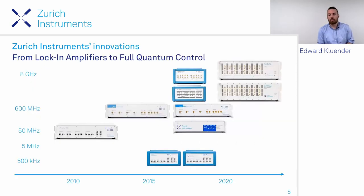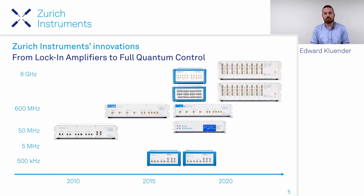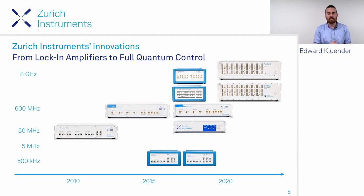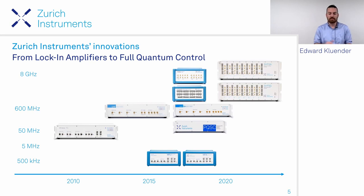All of our application scientists and technical support team are PhD-level researchers, allowing us to provide great support within 24 hours. As we've grown, we've expanded our product lines—starting with the HF2 lock-in amplifier at 50 MHz in 2010, expanding up to 8.5 GHz and down to 500 kHz. In 2018 we added quantum-specific instruments including quantum analyzers and arbitrary waveform generators.